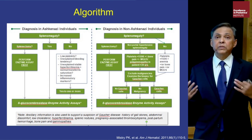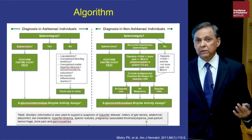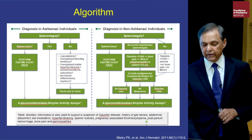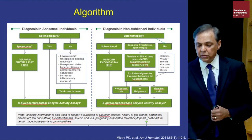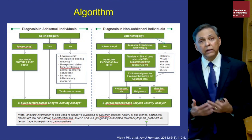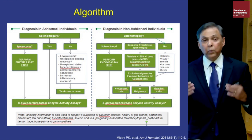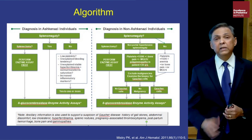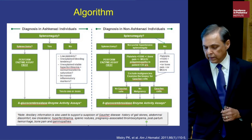Many cases have presented to physicians with splenomegaly and no diagnosis, and physicians recommended splenectomy, which can greatly accelerate disease manifestations. In non-Ashkenazi Jewish individuals, rule out liver disease, portal hypertension, and underlying malignancy, but always keep Gaucher disease in the differential. The diagnosis of Gaucher disease is very simple — a small blood test measuring enzyme activity is the gold standard.